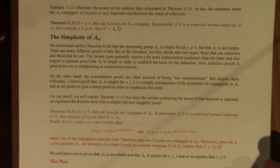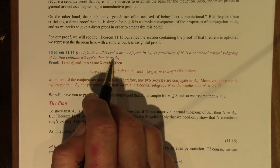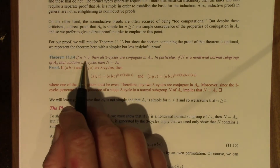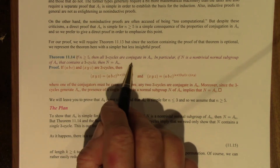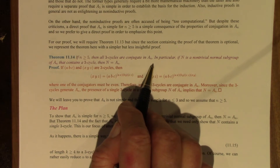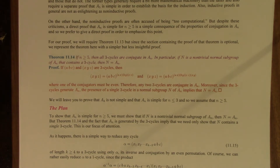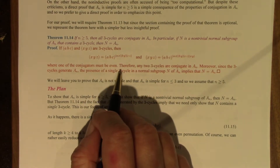For the proof, we will require the theorem we discussed in the last lecture. I've rewritten it here because, strictly speaking, the previous section was optional. If n is bigger than or equal to 5, then all 3-cycles are conjugate in A_n. In particular, if N is a non-trivial normal subgroup of A_n that contains a 3-cycle, then N has to be the full alternating group A_n. This is the tool we're going to use to show that A_n has no non-trivial proper normal subgroups.